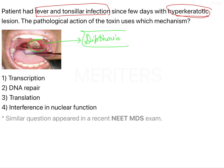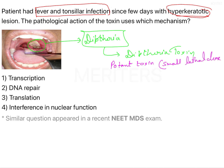In diphtheria, there is a toxin known as the diphtheria toxin. This is a potent toxin, meaning it has a very small lethal dose — the lethal dose is 0.1 microgram per kg.